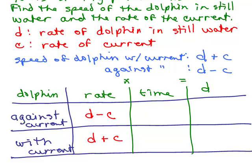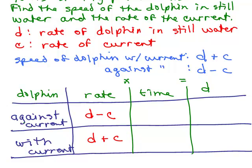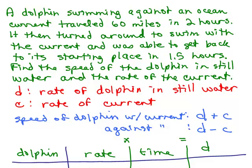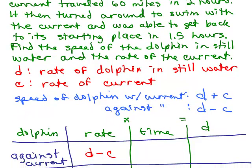Now we need to go back to the original problem and see what it told us about the time. Here we go. It said it traveled against the current 60 miles in two hours. So let's go down here.